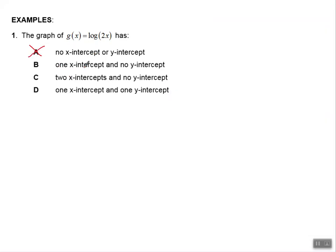Answer choice A says no x-intercept — well, there is an x-intercept, so I'm going to cross that out. Answer choice B says one x-intercept — sure. C says two x-intercepts — well, no, there's only the one x-intercept, so bye-bye C. So now I know that it's going to be answer choice B or answer choice D.